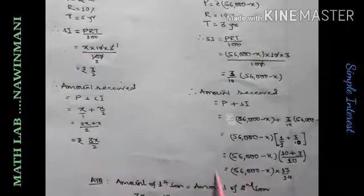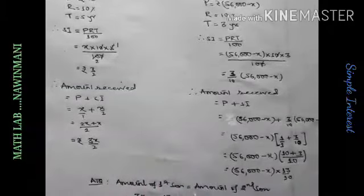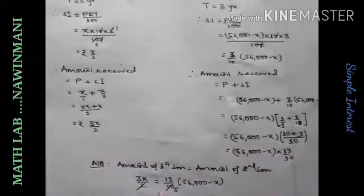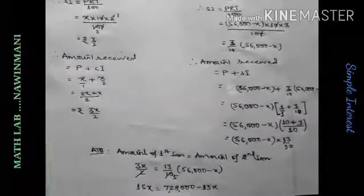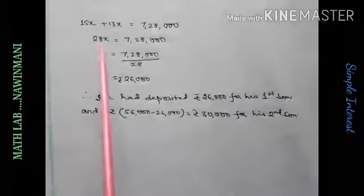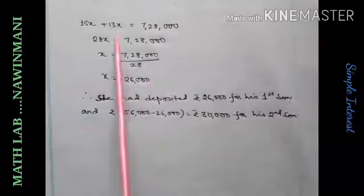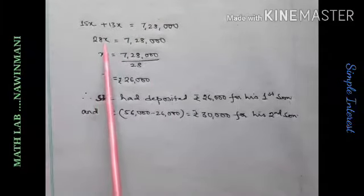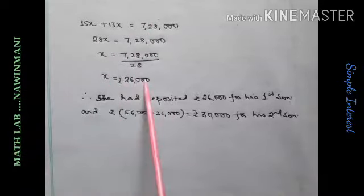So, your first son receives this amount. Your second son receives this amount. And these two amounts are equal. That is the condition. So, this will be equal to this. Then 2 and 10 cancel. Then cross multiply. Then you get 15X. Then that minus 13X will come this side. It will become plus 13X. You add them. It will become 28X equal to 7,28,000. Then cross multiply and cancel. 26,000.